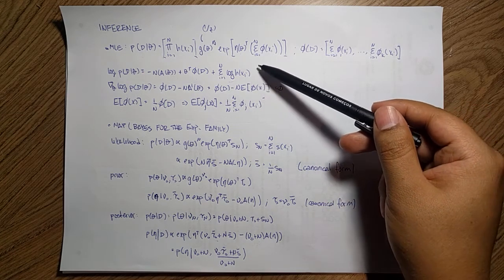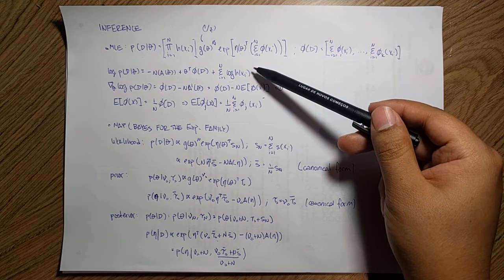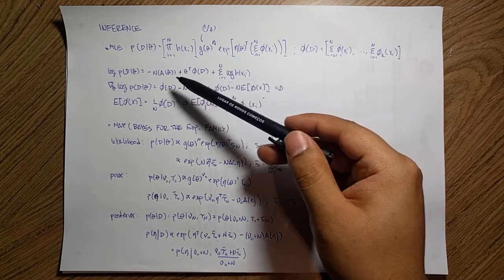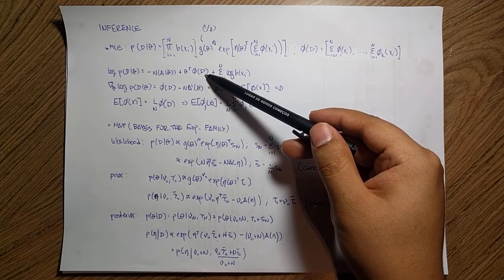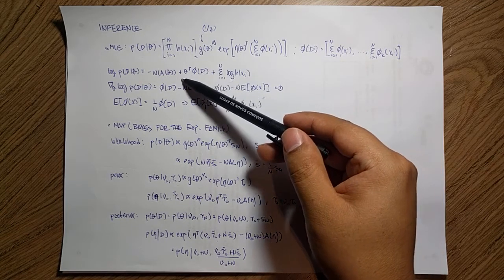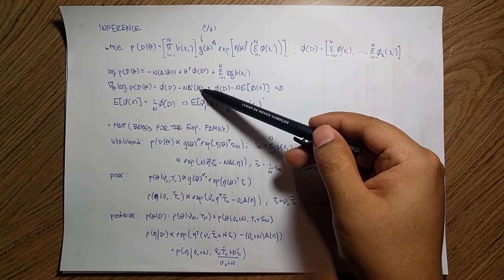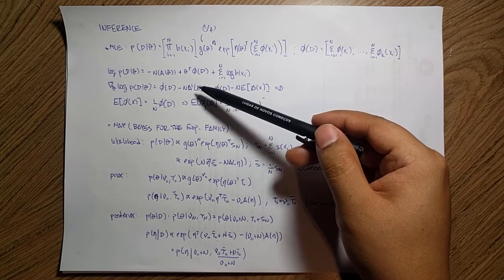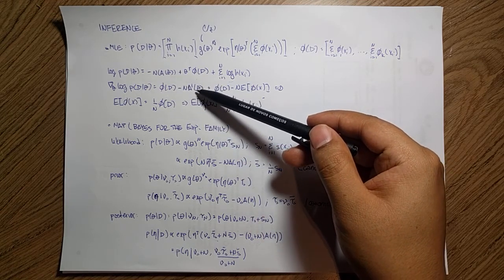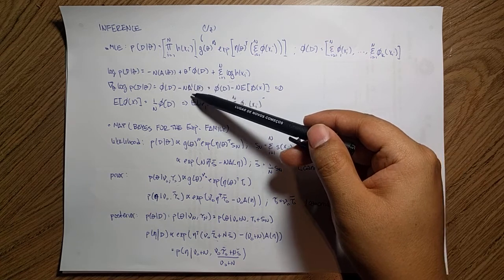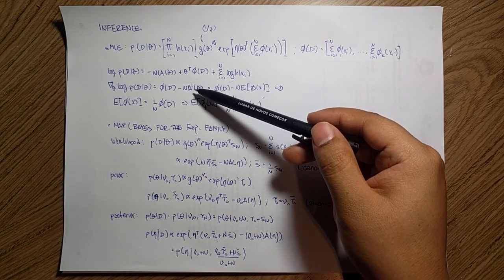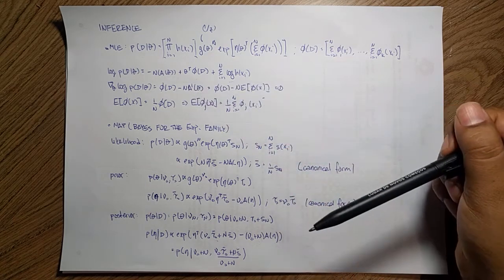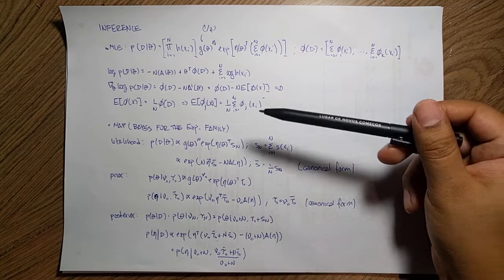Since we want to compute this estimator, we take the derivative with respect to theta and solve when it equals zero to get the optimal value. Applying the derivative with respect to theta, D cancels out and we end up with phi(D) minus the derivative of A. From the previous part, we know the derivative of the cumulant function A is just the expected value of phi(X).